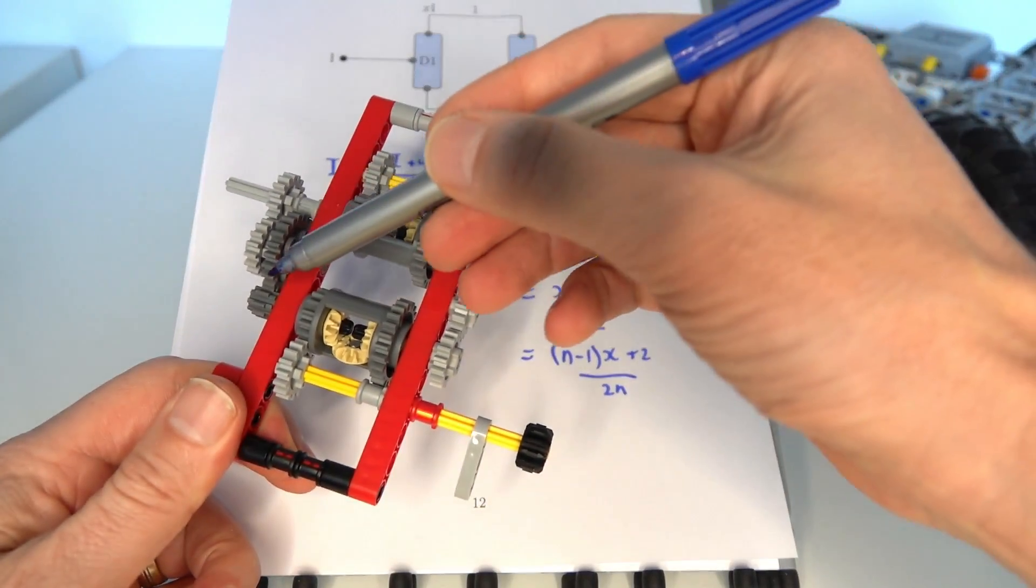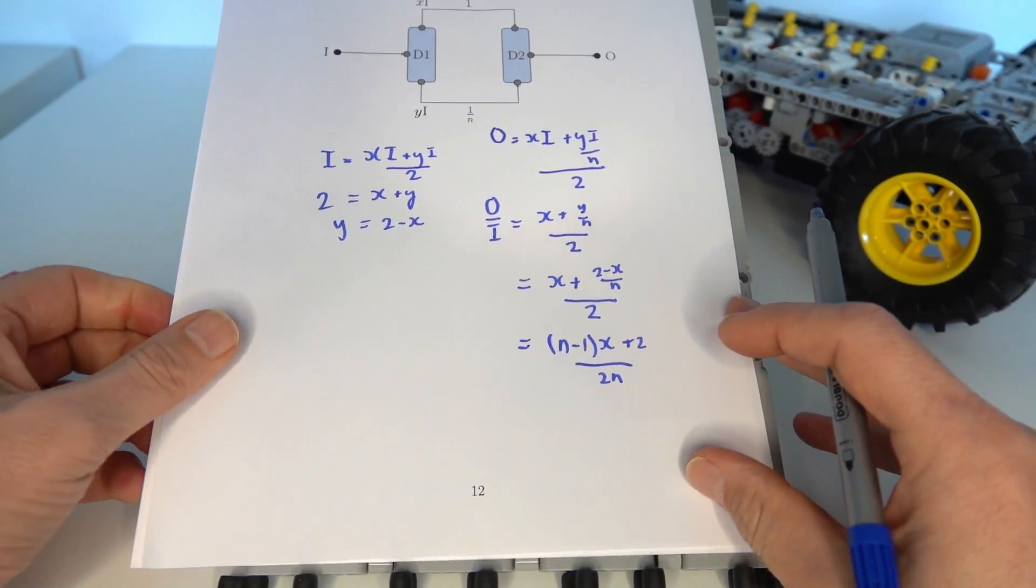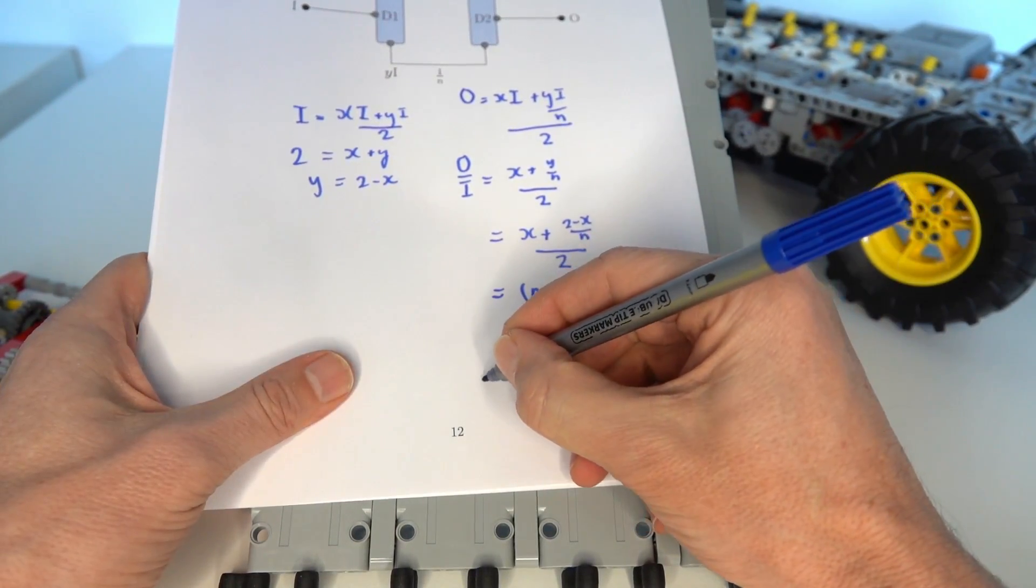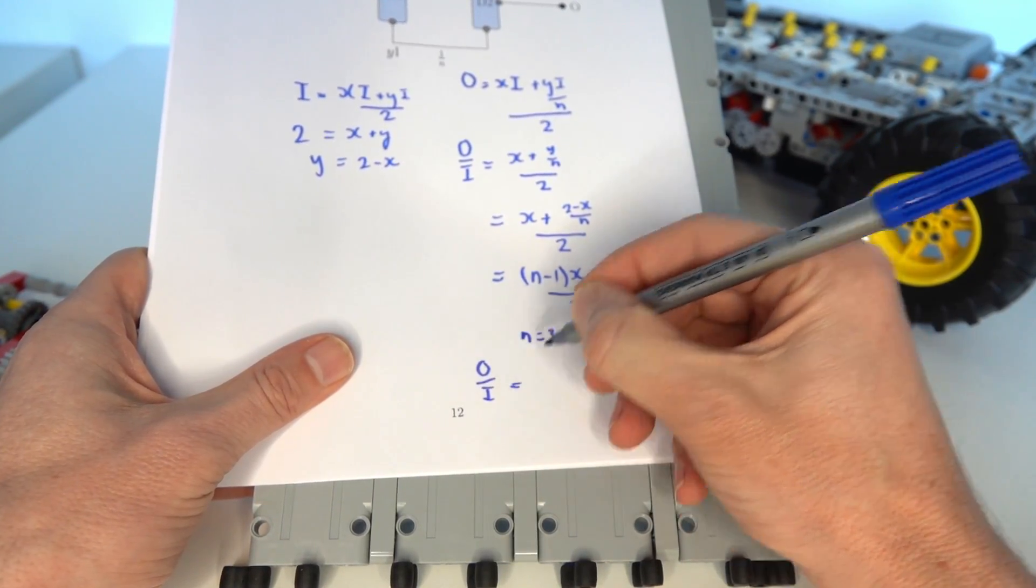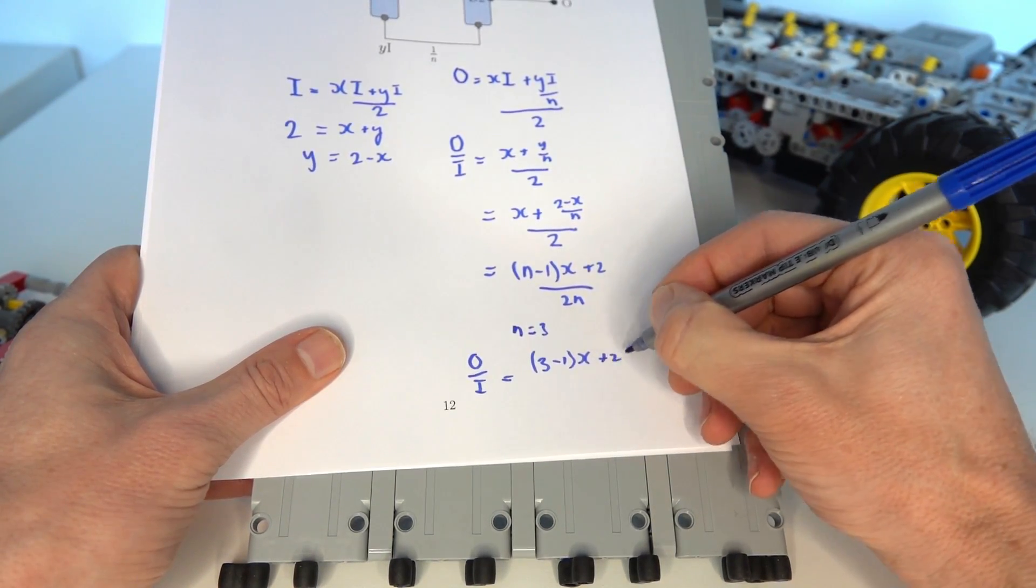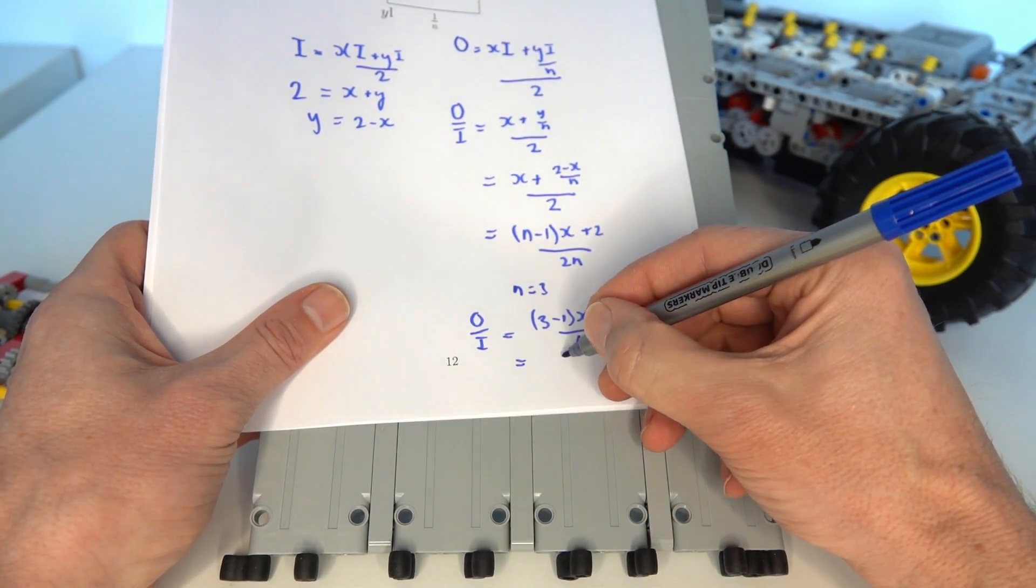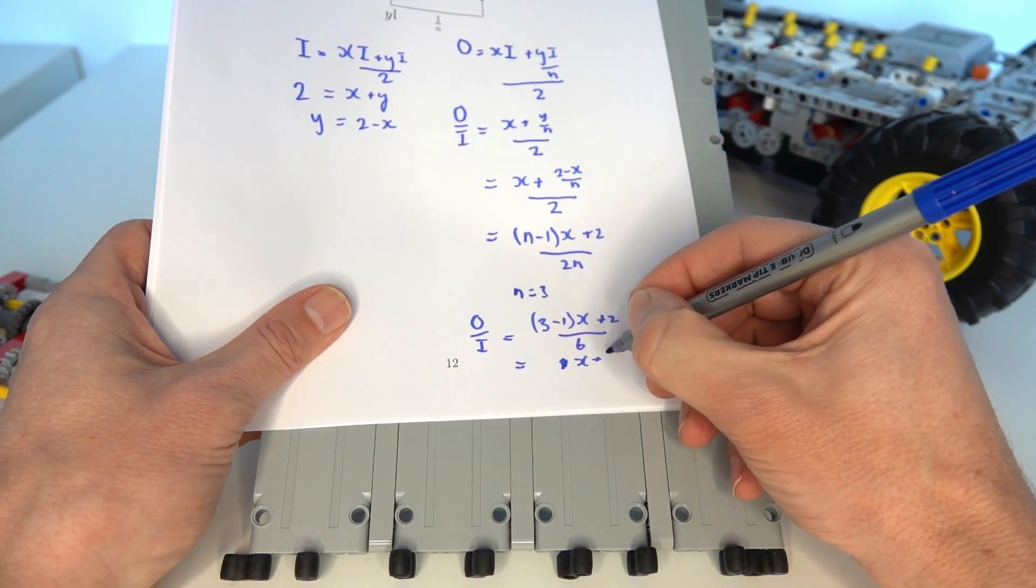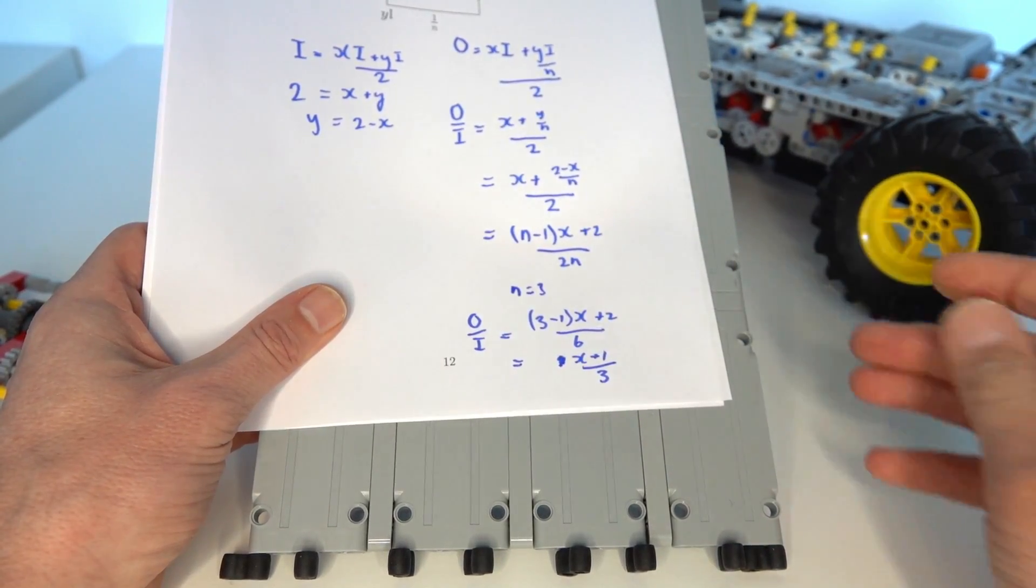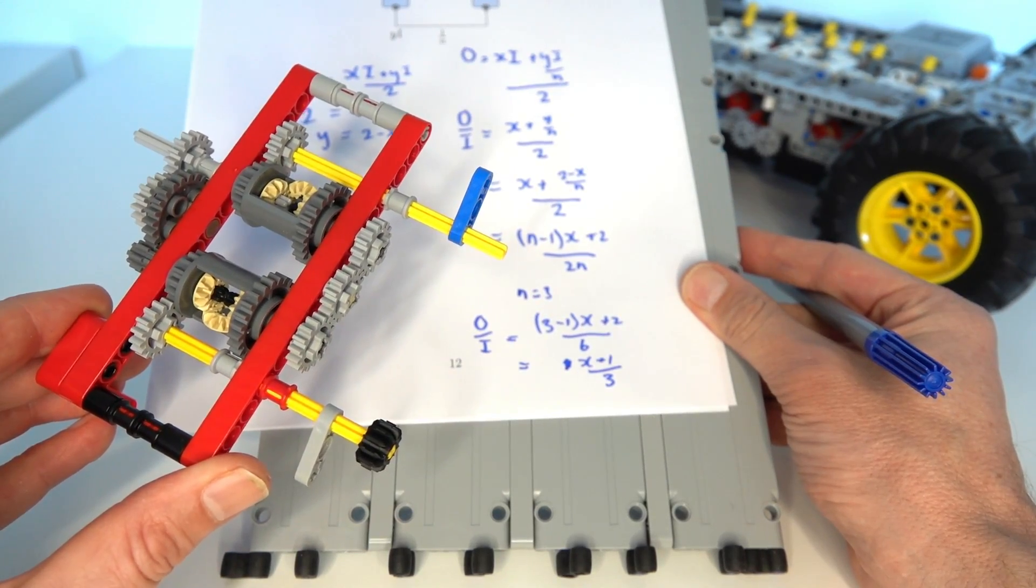So in this implementation here we've got n is equal to 3, we've got that 1 to 3 gearing ratio on the left there, so what we can do is replace in this equation. We can say that for n equals 3 we have that the output to input is given by 3 take away 1 times x plus 2 over 2 times 3 is 6 and we can simplify that further to give us x plus 1 over 3. So that's the equation that relates output to input for this specific example here that I've been talking about and we can analyze that further by plotting that on a graph.